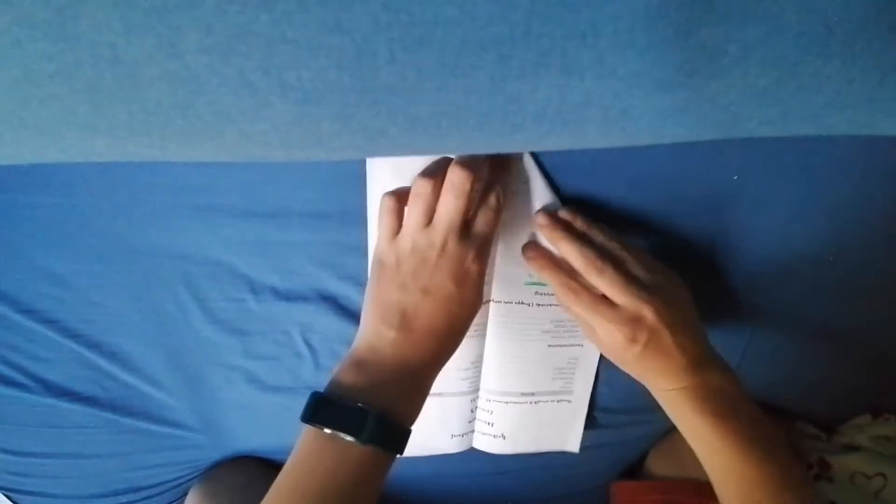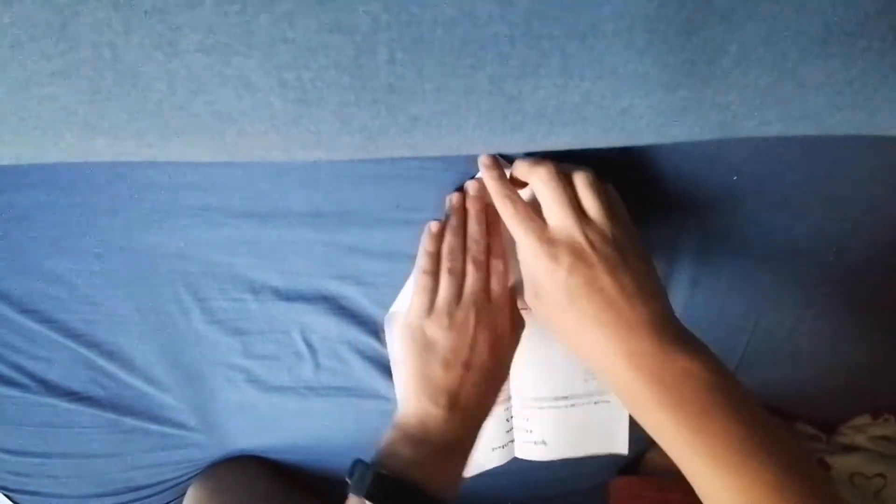Fold two of the corners, but they must be on the same side, just like you would with a normal paper airplane.